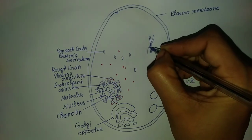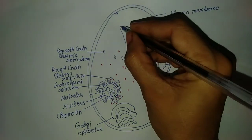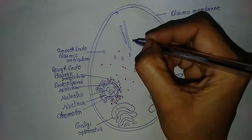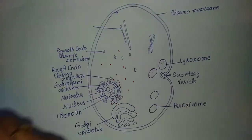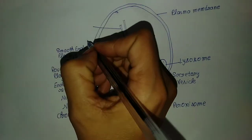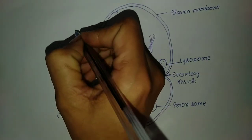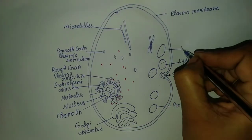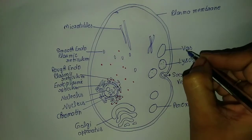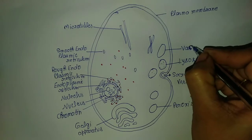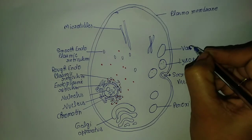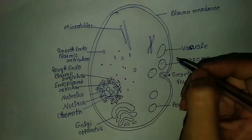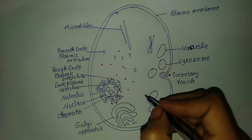These are microtubules. Microtubules are present inside the cell membrane. This is the vacuole. Animal cells have small-size vacuoles, and plant cells have large-size vacuoles.